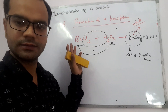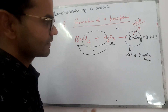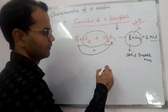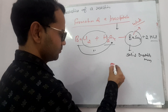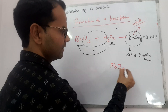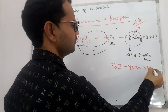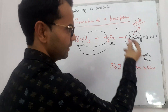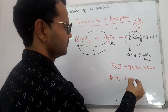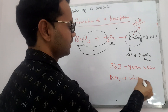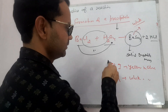So we have observed two precipitates: in the first reaction, lead iodide — yellow in color — and in the second reaction, barium sulfate — white in color. These are examples of the second characteristic: formation of a precipitate.